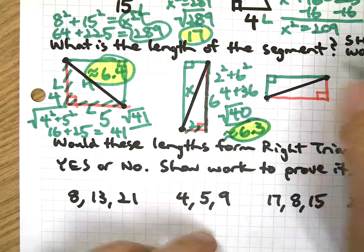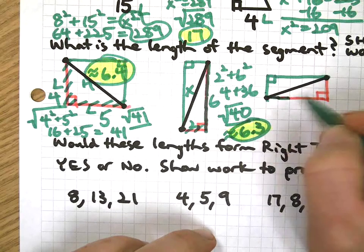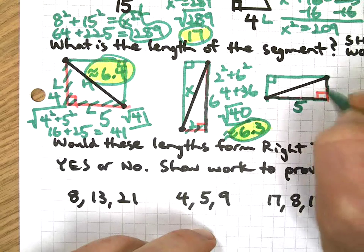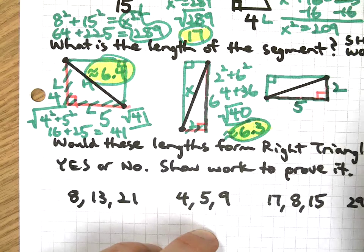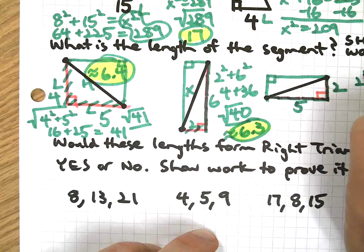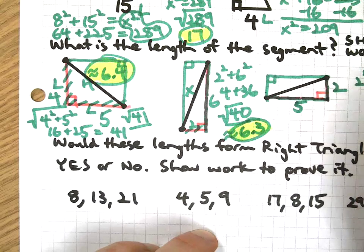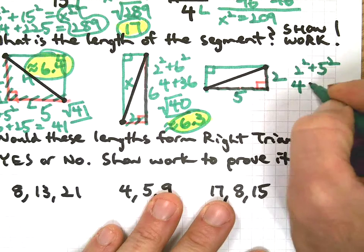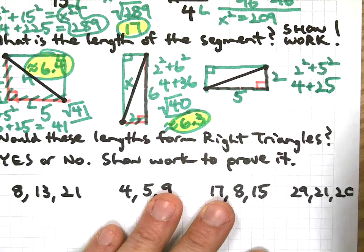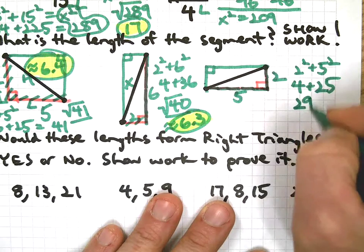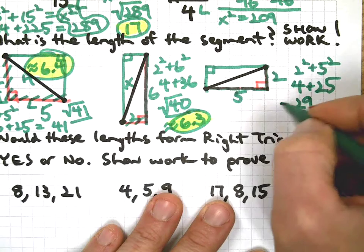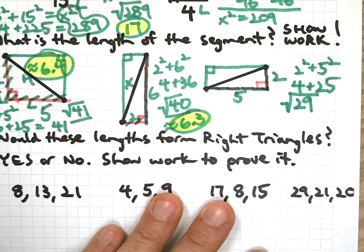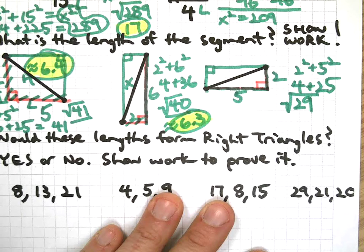And last one, last one. 1, 2, 3, 4, 5. 1, 2. 2 squared plus 5 squared. This looks really close - sorry about that - really close to that last one.